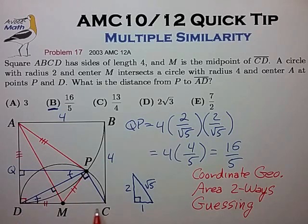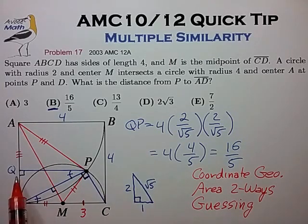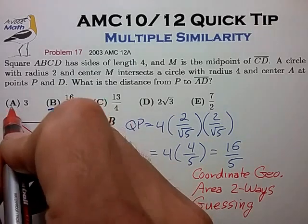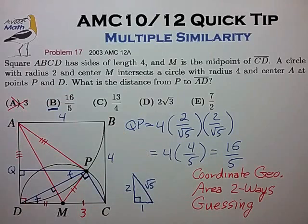And so we can use this figure to basically estimate the length of QP. So since DC is of length 4, we can make a little mark here to indicate a length of 3. So it appears that QP is just a little bit larger than 3.